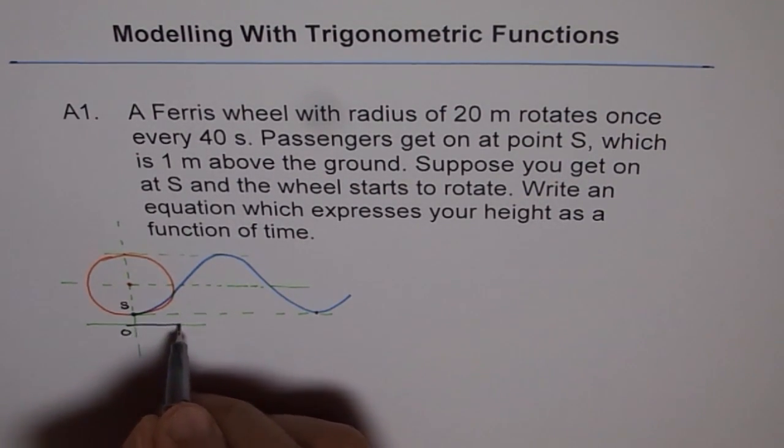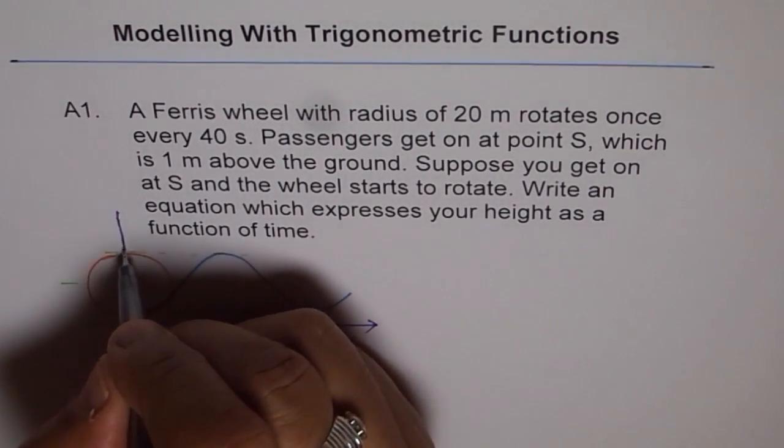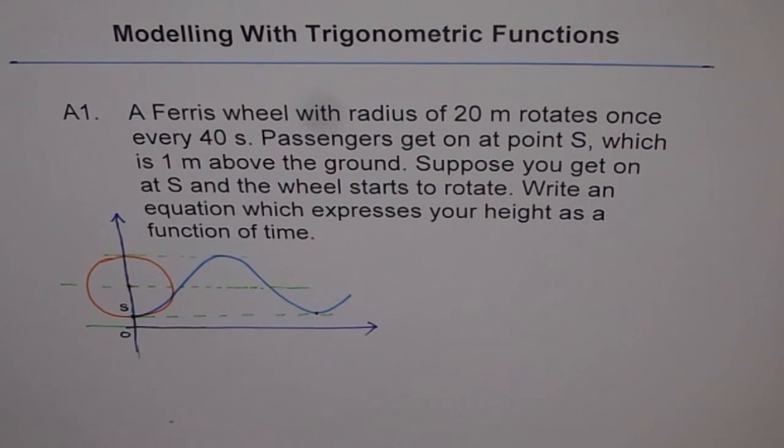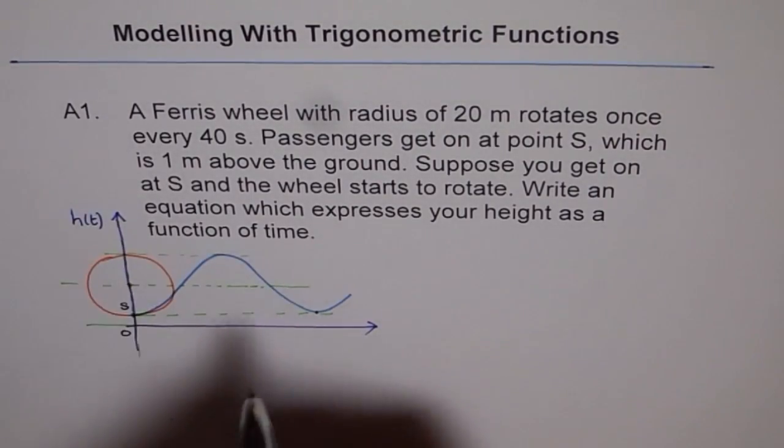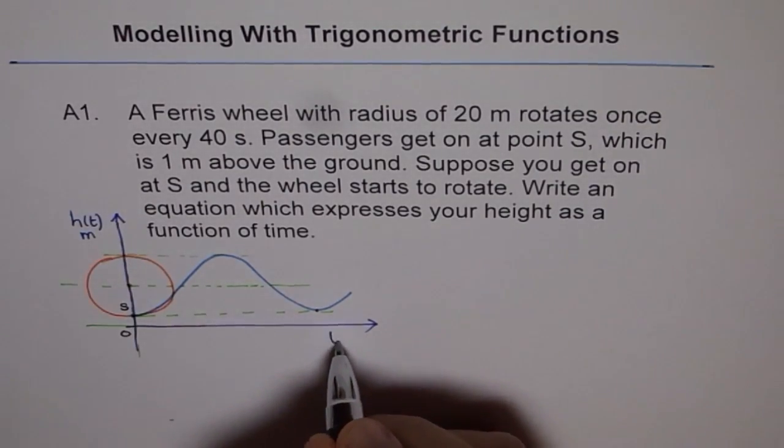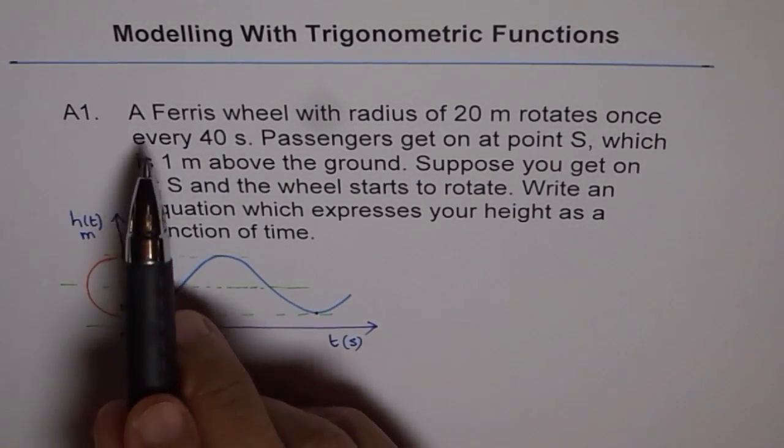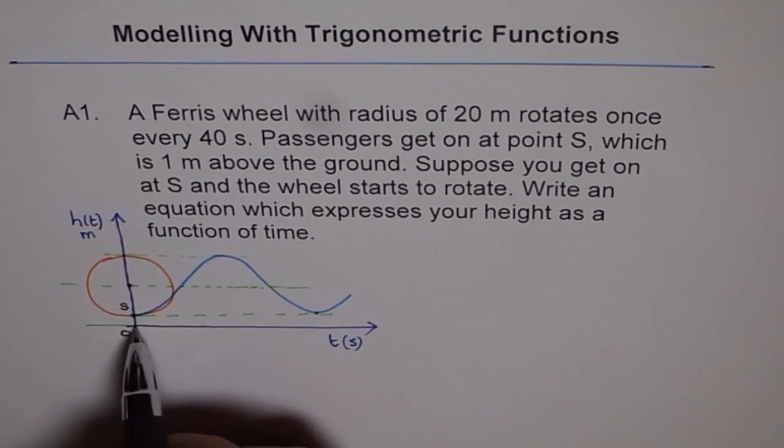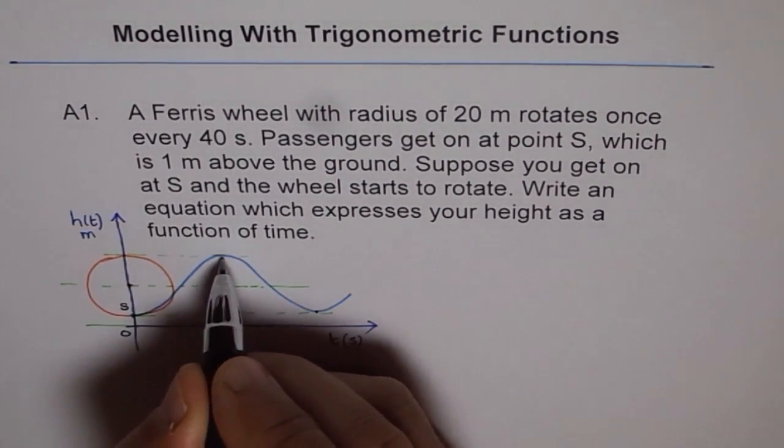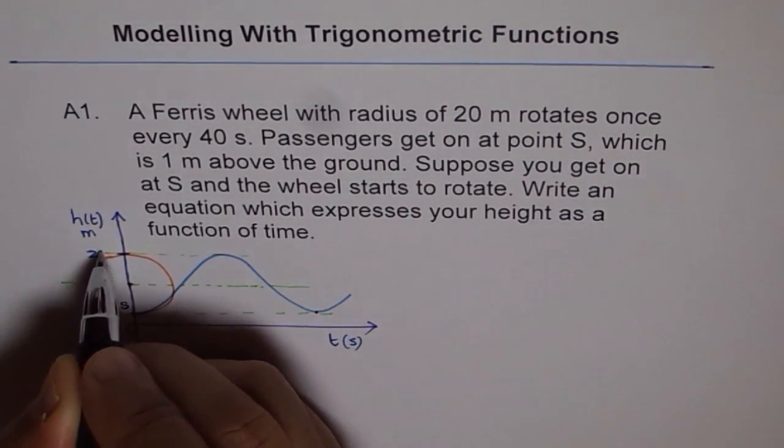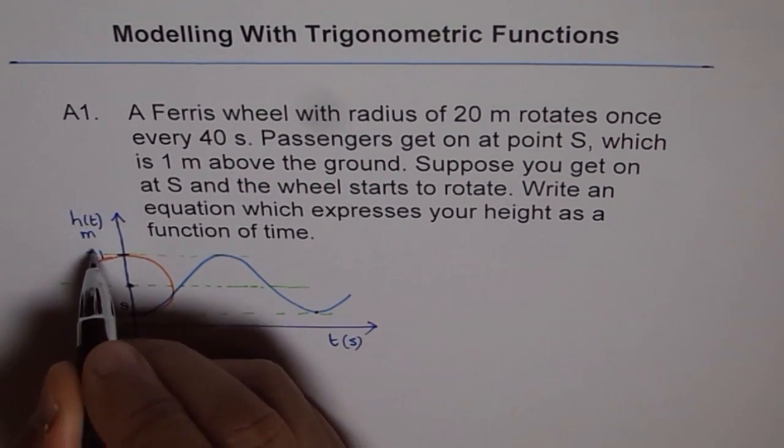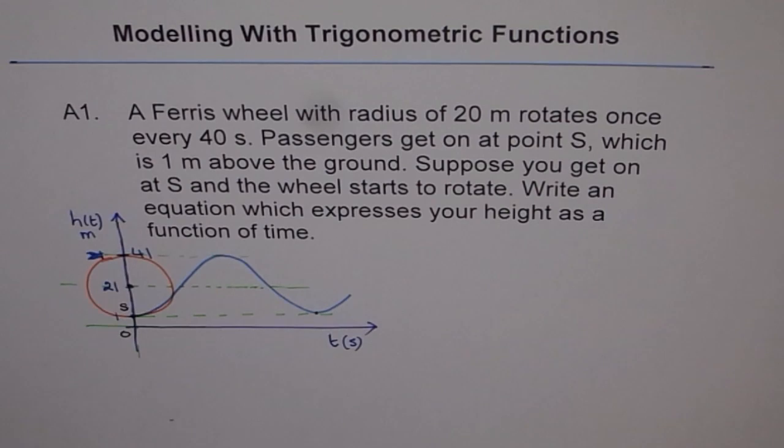Along y-axis, we are taking height of a person with time in meters, and this is time in seconds. A Ferris wheel with radius of 20 meters means from here to here is 20, from here to here is 20, and this is 1, making it 21. So the maximum height at this position should be 21 for us. And this position we know is 1, which is the minimum. And the center will be 1 plus 20 equals 21. This is 41 at the maximum, 21 at the center, and 1 at the minimum.